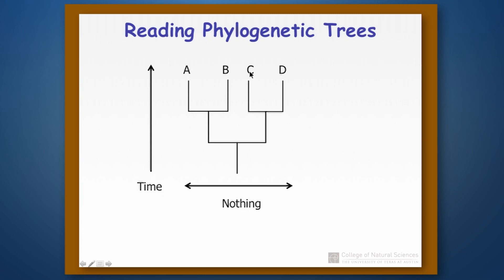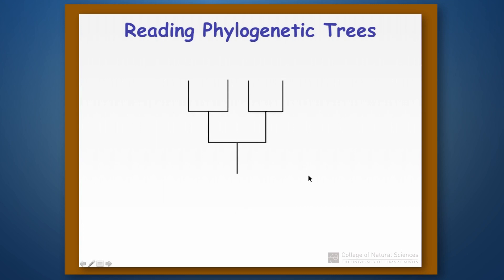For example, B is not more closely related to C than it is to D — it's actually equally related to C and D. The reason is that if you trace through the tree, you go through the same set of common branches to get from B to C as you do to get from B to D. One way to think about this is that every node on the tree can act as a pivot that you can spin around. So this tree with A, B, C, D is exactly the same as a tree with A, B, D, C — all we did was spin around one node 180 degrees. These two trees topologically are exactly the same, even though they look different.